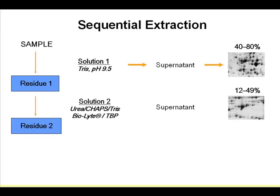In the second step, from the pellets, you add detergent, urea, CHAPS, and Tris — a much stronger buffer. You get a second extraction of proteins from the same sample, and you get different groups of proteins out from this pellet.